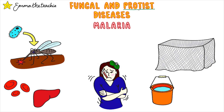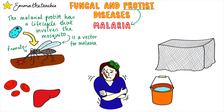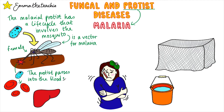Malaria is a deadly disease caused by protists. The malarial protist has a life cycle that involves the mosquito. Mosquitoes are vectors for malaria, meaning that they carry the disease. Only female mosquitoes bite humans, and if the mosquito is infected it passes the protist into the human's bloodstream.